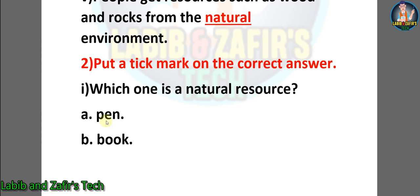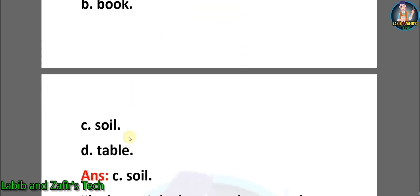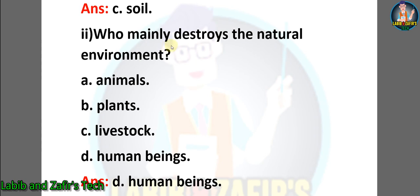Number one: which one is a natural resource? Options: pen, book, soil, or devil. The correct answer is C, soil. Number two: who mainly destroys the natural environment? Options: animals, plants, livestock, or human beings. The correct answer is D, human beings.